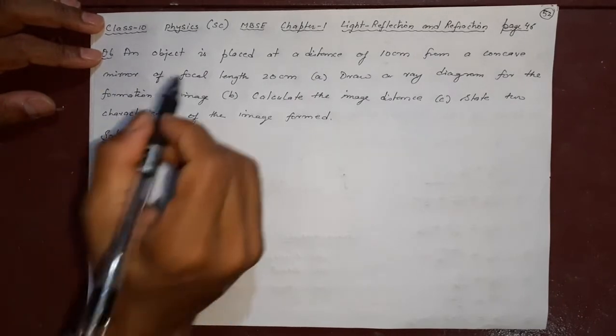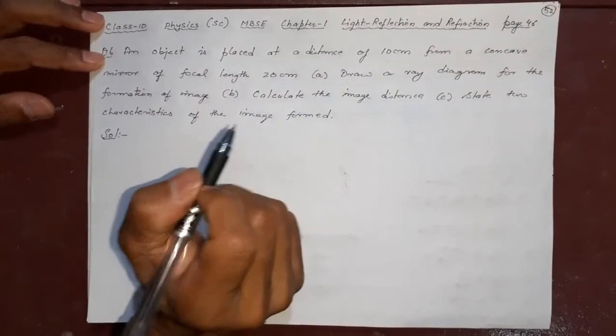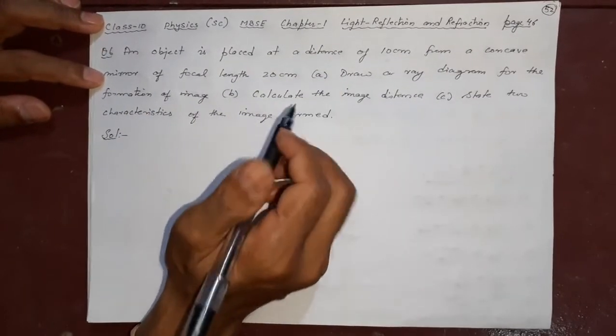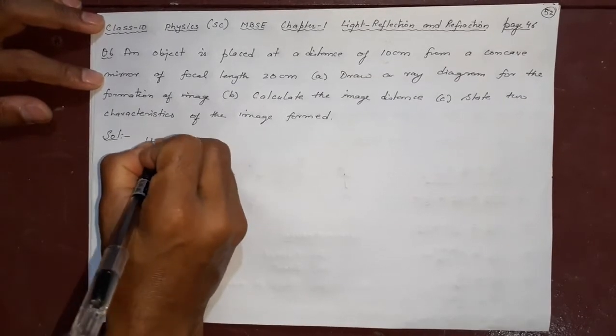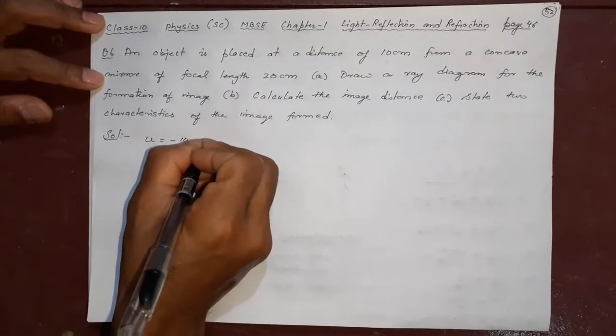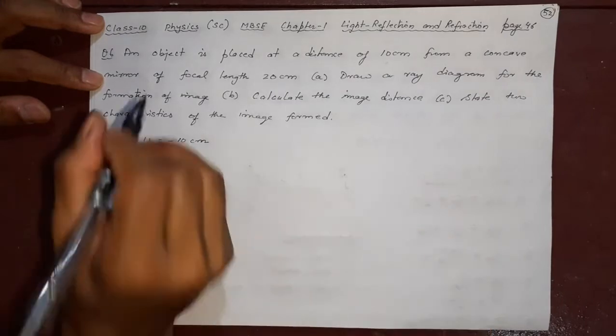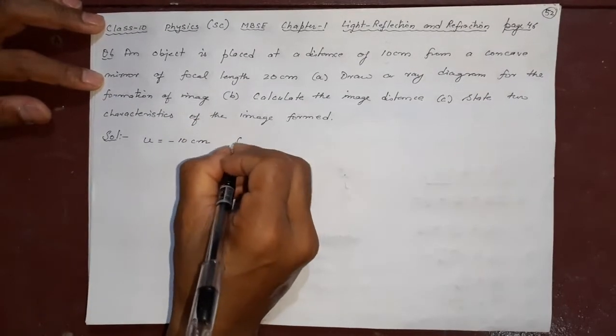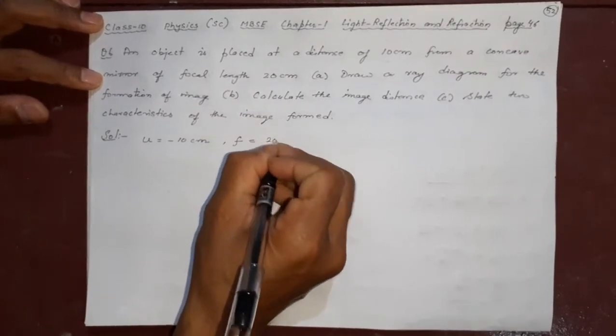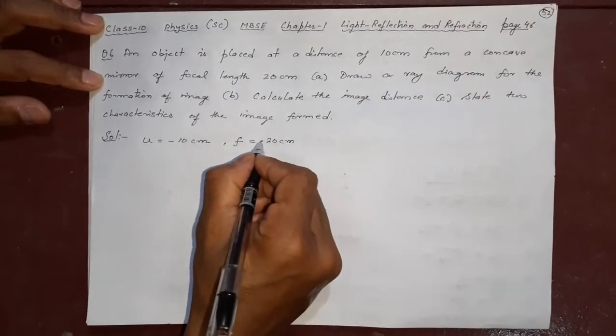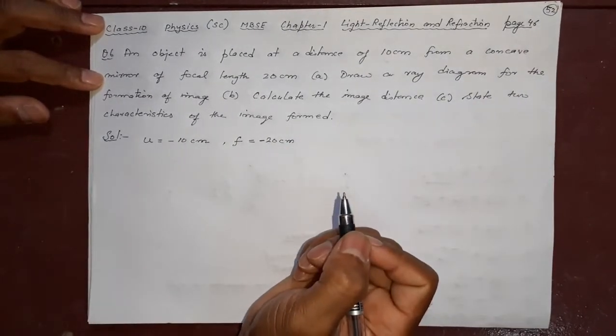An object is placed at a distance of 10 cm from a concave mirror. Object is always negative because it is always kept on the left side. Concave mirror of focal length 20 cm. Concave means it should be minus. Convex means it will be positive.